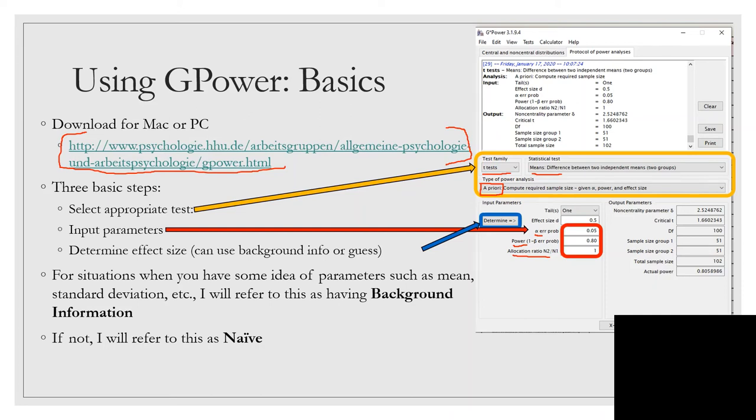For situations when we're walking through these examples, when you have some idea of parameters such as mean, standard deviation, and so forth, I'll refer to that as having background information. If not, I'll refer to this as naive, in which we'll essentially have to guess a reasonable estimate of the effect size.